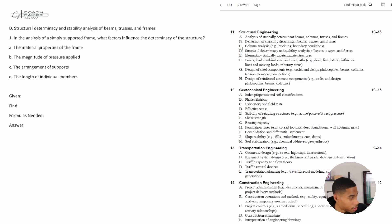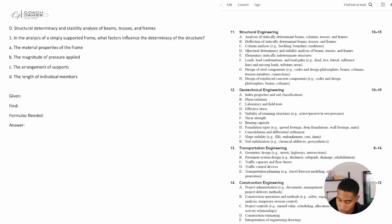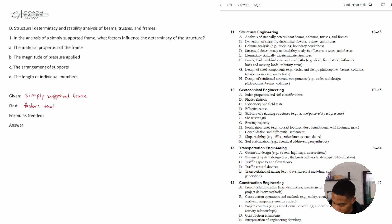Let's take a look at these. Number one says: in the analysis of a simply supported frame, what factor or factors influence the determinancy of the structure? Let's go through the information we're given. We know that this is a simply supported frame, and we're trying to find factors that influence determinancy.